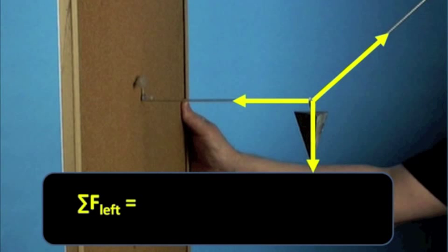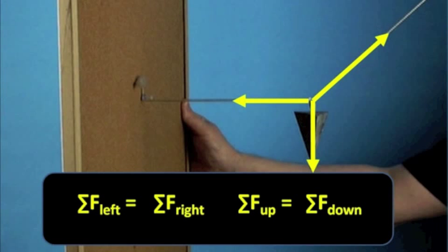The sum of every force that acts to the left will equal the sum of every force acting to the right. And the sum of every force that acts up will equal the sum of every force that is acting down. This should help us understand the first problem.